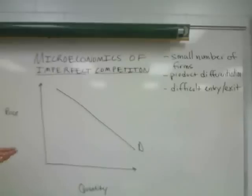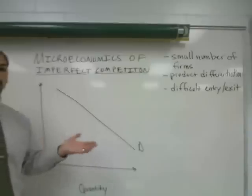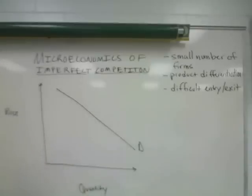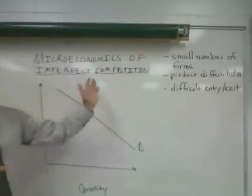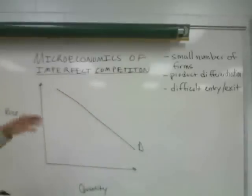That may range from 75 firms in monopolistic competition to three or four firms in an oligopolistic market to, of course, a single firm in a monopolistic market. All three of those imperfectly competitive market structures will produce a demand curve that is negatively sloped.